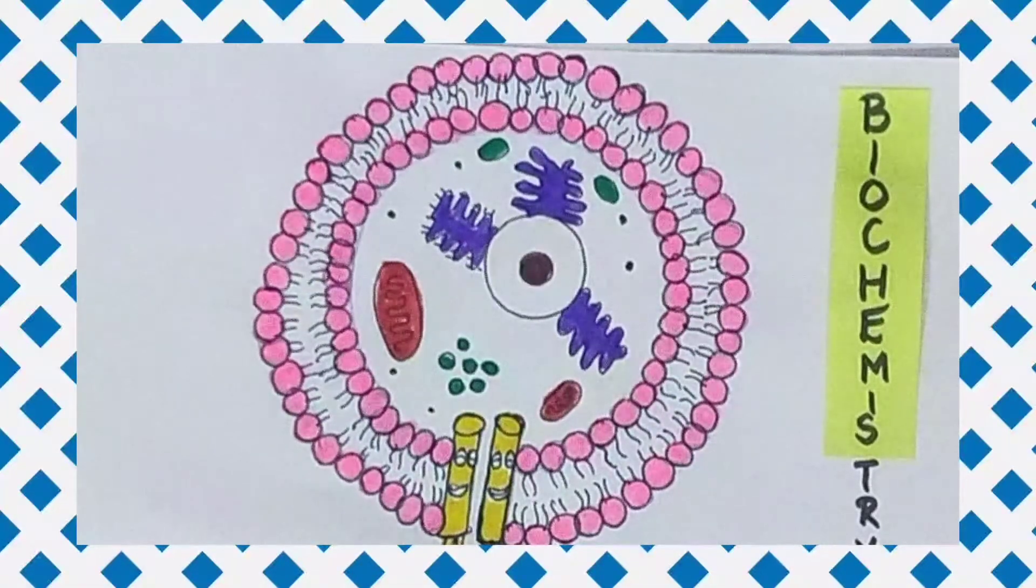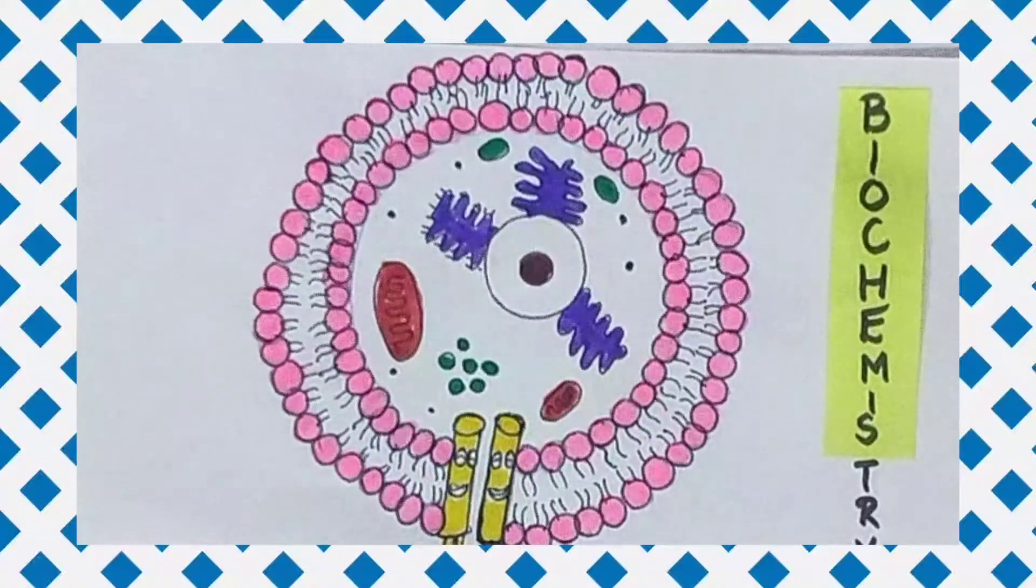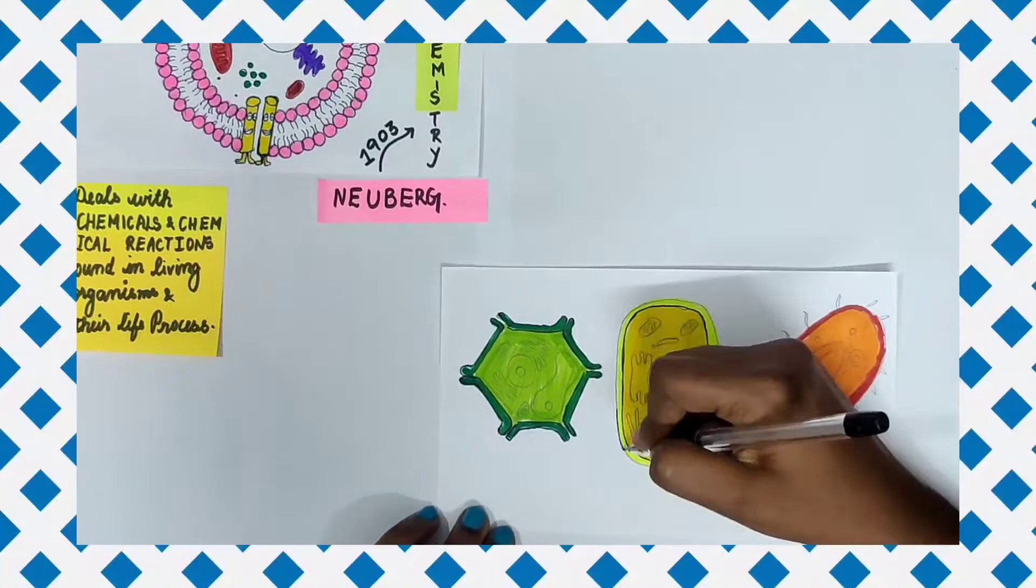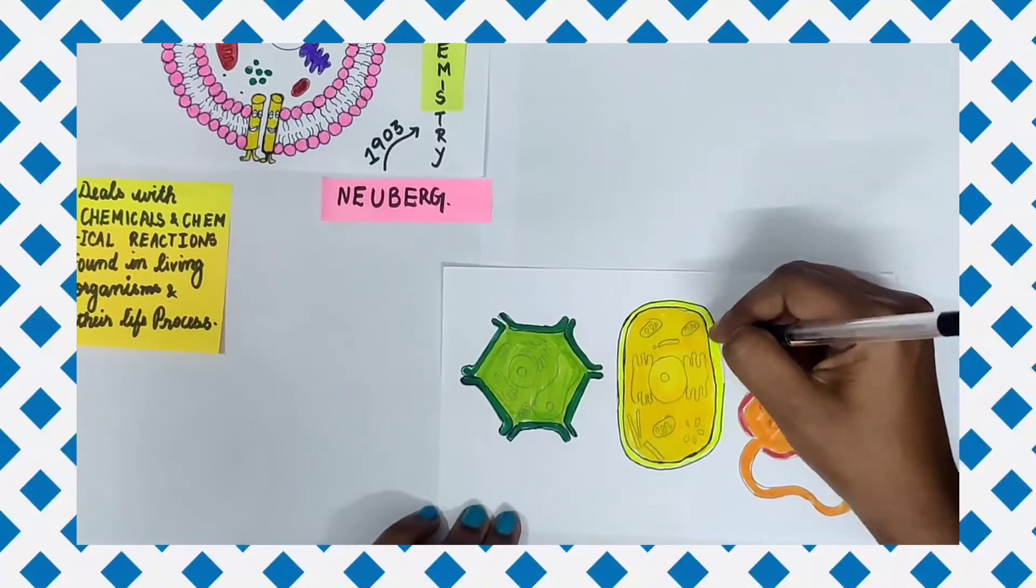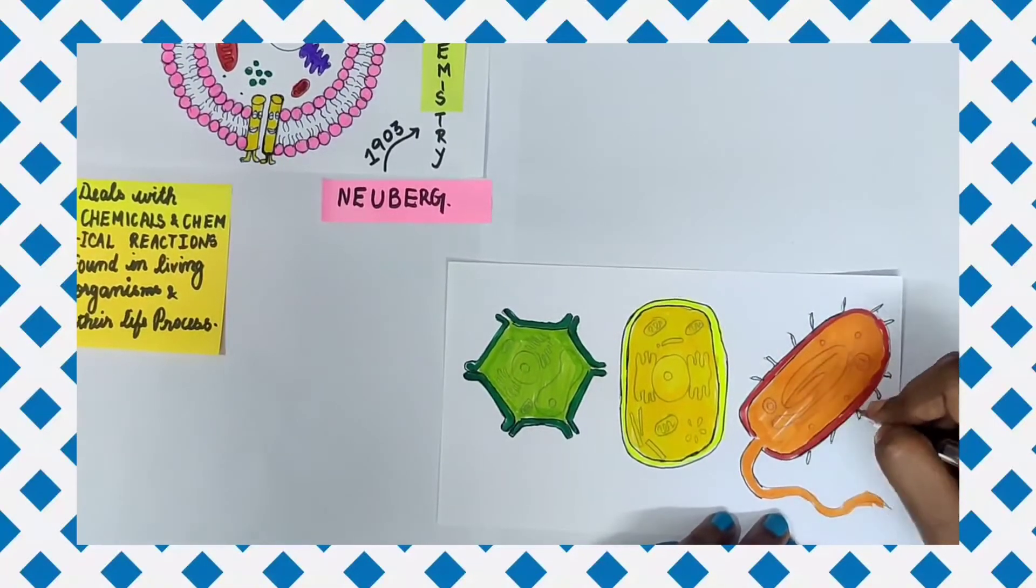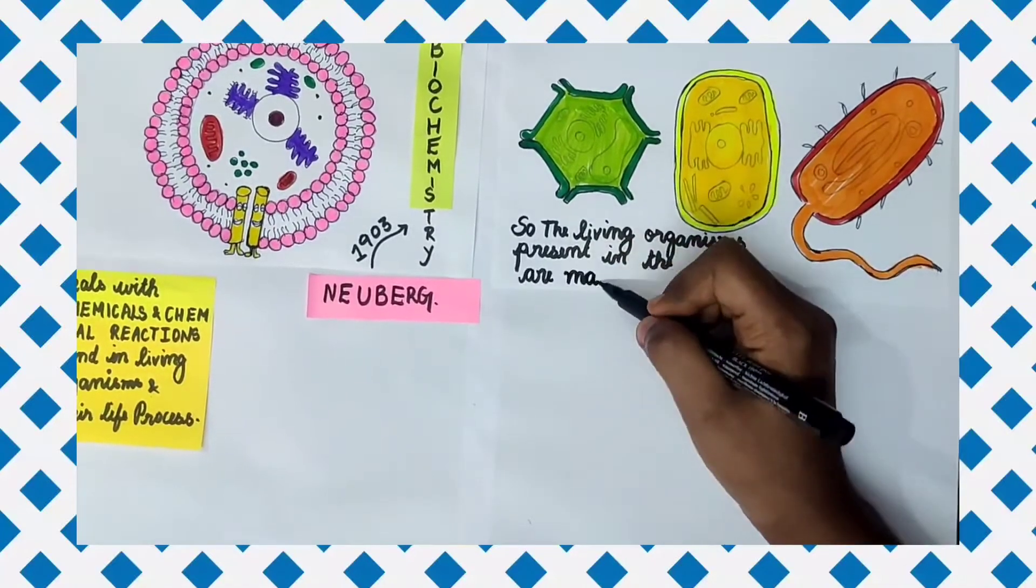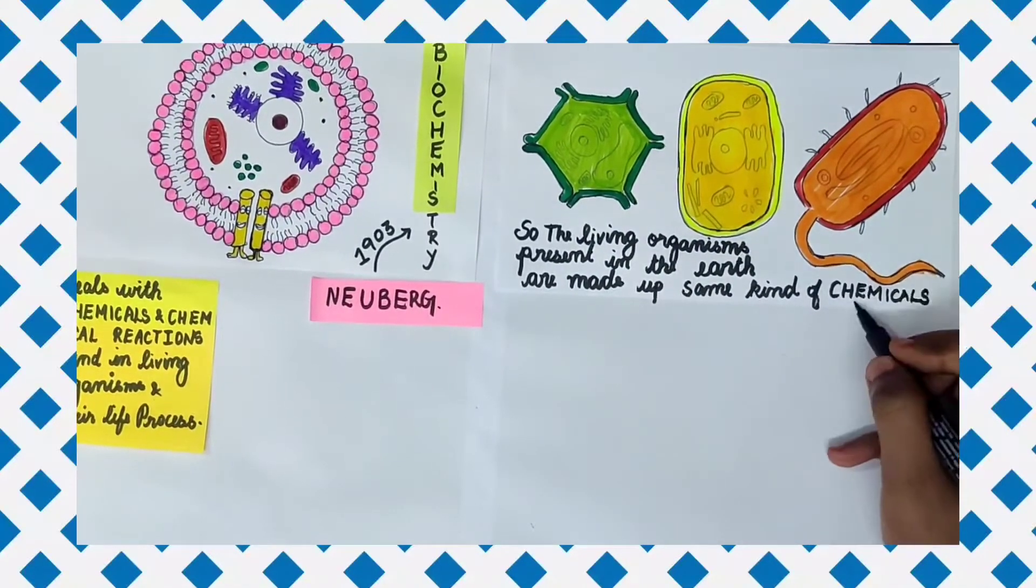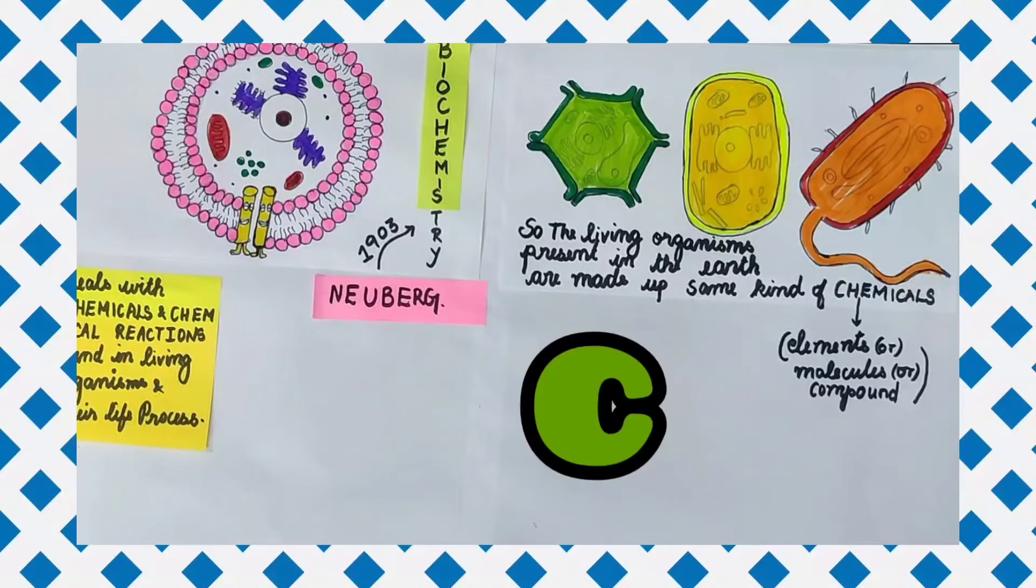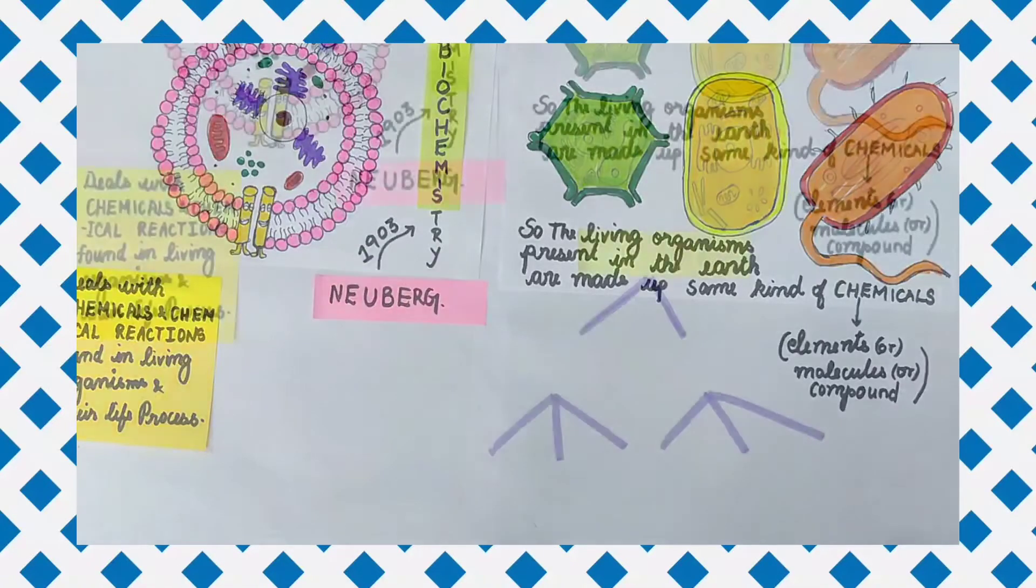Are all living organisms made up of the same type of chemicals? Yes, they are made up of the same type of chemicals. If we perform an analysis on plant cells, animal cells, and microbial cells, we will obtain the same kind of elements. Living organisms are made up of the same kind of elements or compounds or molecules like carbon, hydrogen, oxygen, sulfur, nitrogen, etc.